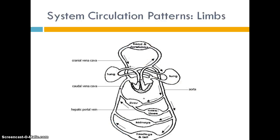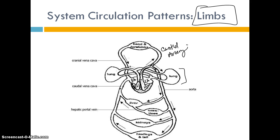Now back to systemic circulation. We have the aorta coming right out of the left ventricle, immediately branching to the upper and lower parts. Focusing on the circulation for the upper extremities and head: coming off the main aorta, there are two major arteries, but we'll focus on the one going to your head — the carotid artery. It subdivides into many arteries and eventually makes its way back to the superior vena cava.